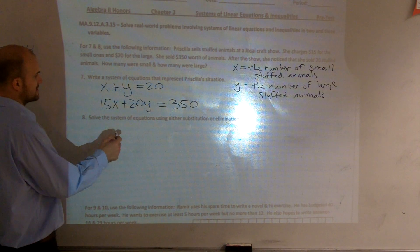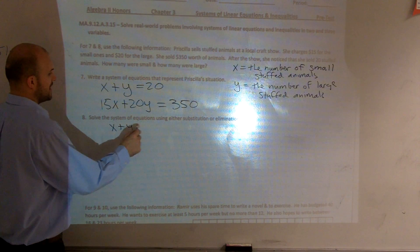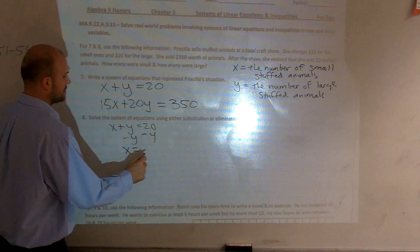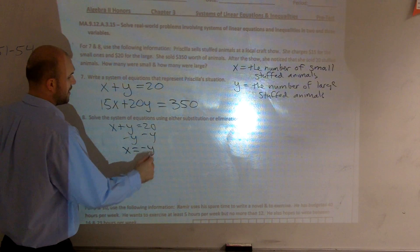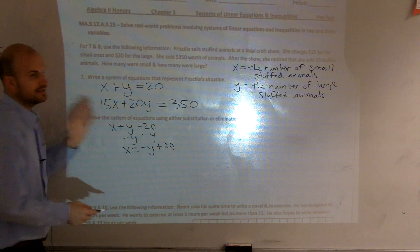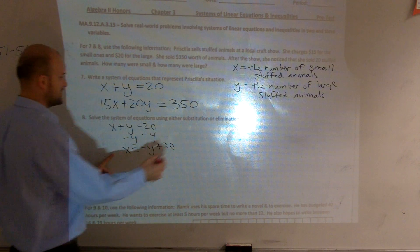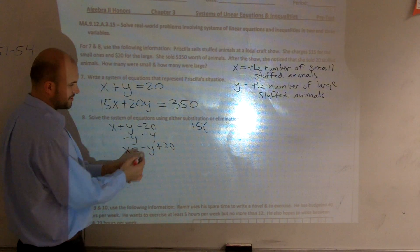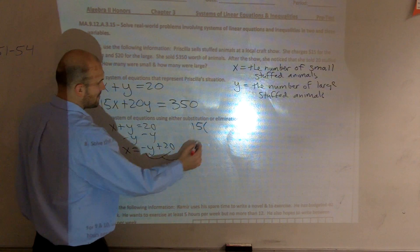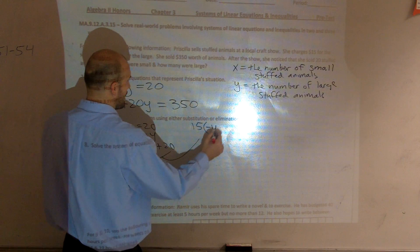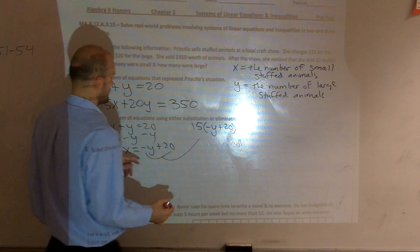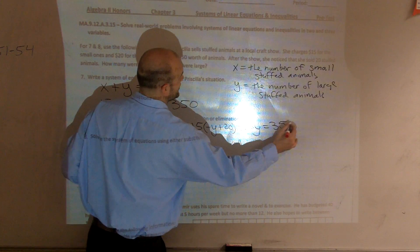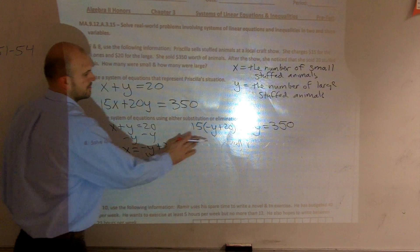Let's solve for x. So, I could say x plus y equals 20. Solve. So, I get x equals negative y plus 20. Now, let's plug that into the other equation. So, 15 times, instead of x, I'm now going to substitute in this value. So, I have negative y plus 20 plus 20y equals 350.